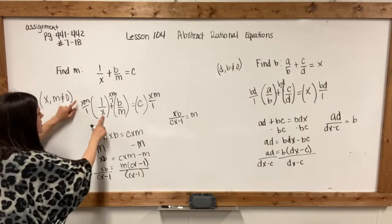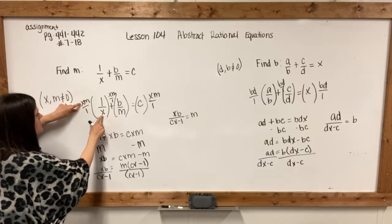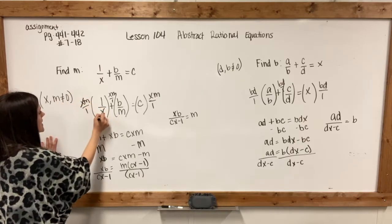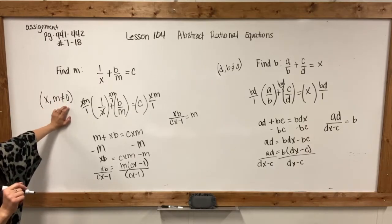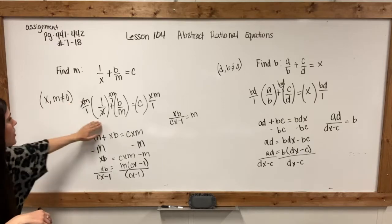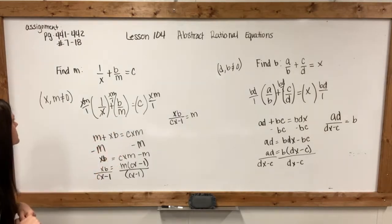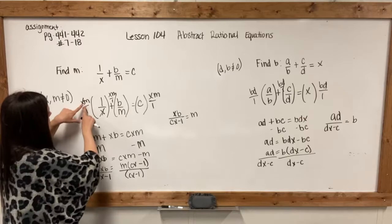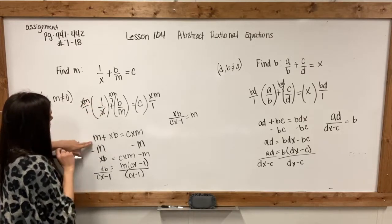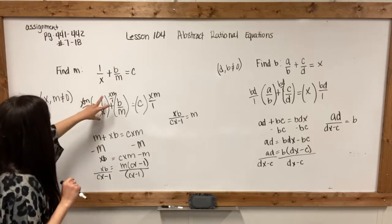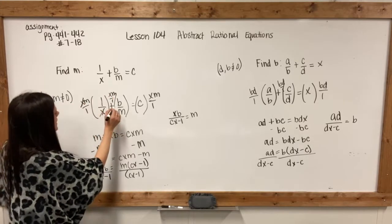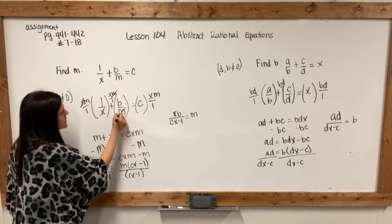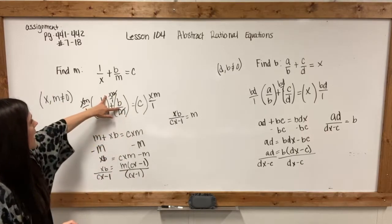Now I can cross simplify. I've got an x on the bottom and an x on the top here, so I can cancel these out. Keep in mind that x and m are not equal to zero — it tells you that at the very beginning. So now let's multiply: m times 1 gives us just m. The next one, we have xm with m as the denominator, so the m cancels out and I'm left with xb.